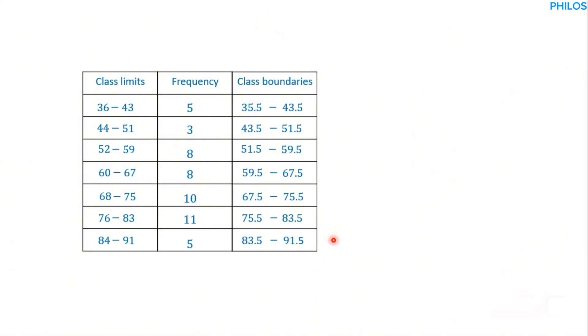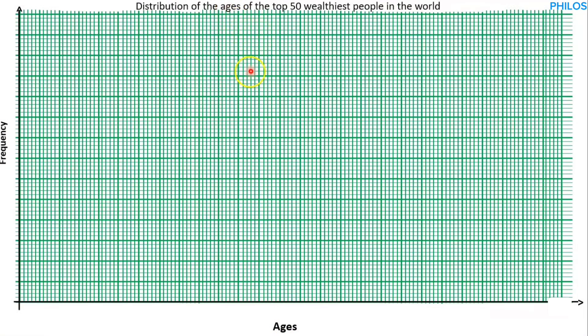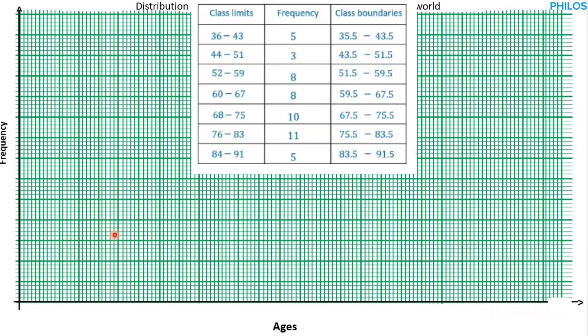To prepare the histogram, let's take a graph sheet. This is our graph sheet. Let's draw the x and y axes. The y-axis we call 'frequency,' and the x-axis we label accordingly. Then we give it a title. Now when you look at the frequency, you will see that the highest frequency is 11.